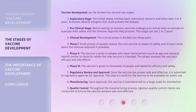Vaccine development can be divided into several key stages. Stage 1: Exploratory stage. This initial phase involves basic laboratory research and often lasts two to four years. Scientists identify antigens that could prevent the disease. Stage 2: Preclinical stage. Before testing on humans, vaccines undergo preclinical tests on animals to evaluate their safety and the immune response they provoke. This stage can last one to two years.